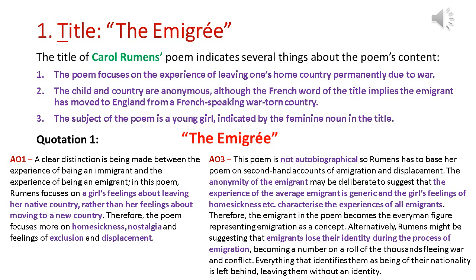The second thing we can say about the title is that the child in the poem and the country are anonymous, although the French word in the title implies that the emigrant has moved to England from a French-speaking, war-torn country. Finally, the noun used in the title is a feminine noun, so we know that the subject of the poem — the young girl — is female.